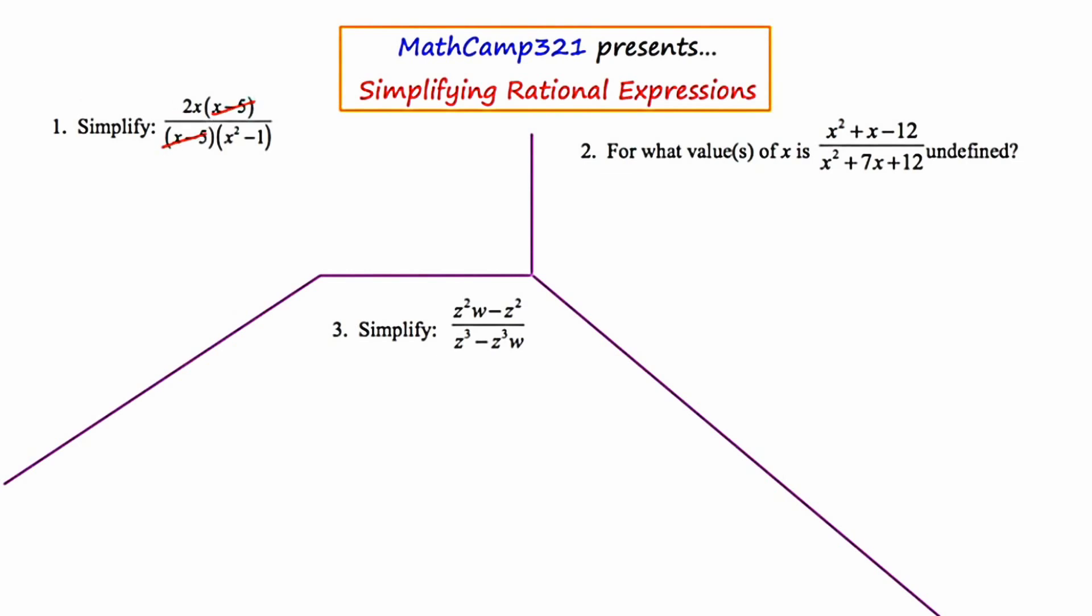And when I do that, I'm left with 2x over x squared minus 1. So as I look at this result, I notice that the denominator, x squared minus 1, can be factored even further using the difference of two squares technique. So I'm going to write this as 2x over x plus 1, x minus 1.